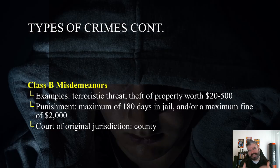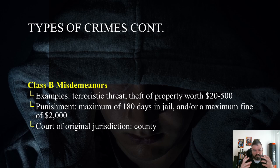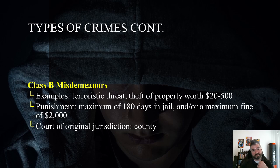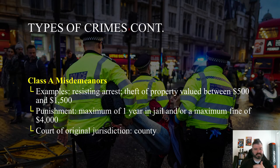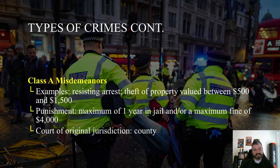Class B misdemeanors include making terroristic threats and theft of property worth $20 to $500. The punishment is a maximum of 180 days in jail and/or a maximum fine of $2,000. The court of original jurisdiction is the county court. Class A misdemeanors include resisting arrest and theft of property valued between $500 and $1,500. The punishment is a maximum of one year in jail and/or a maximum fine of $4,000. Again, the court of original jurisdiction is the county court.